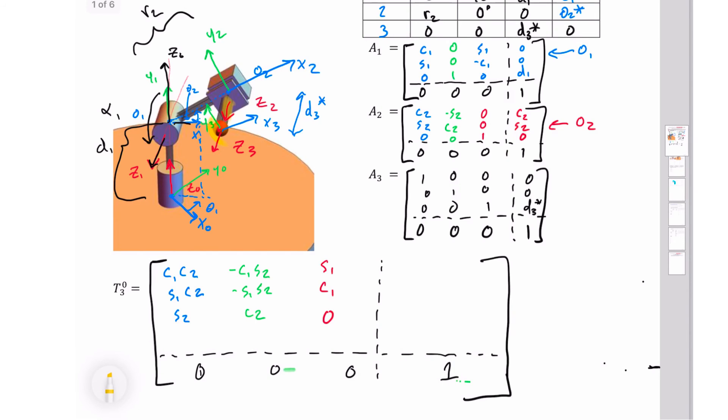Finally, we want to know where is this final point, this origin o3, with regards to the base frame. We'll start with the x component of that. The x component is going to be given by r2 cosine theta 1 cosine theta 2, plus a sine 1 d3 star.